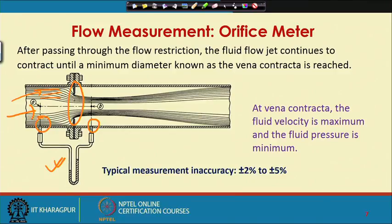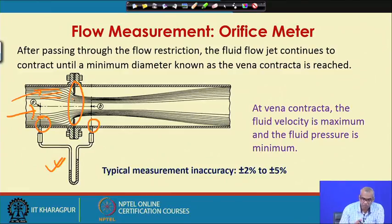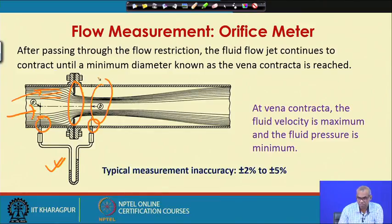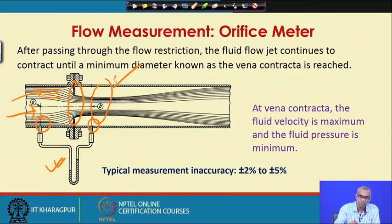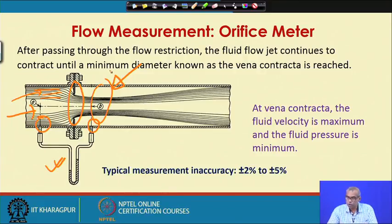As the fluid approaches the flow restriction, the flow jet contracts, but it continues to contract even after leaving the orifice to some extent, and then again it expands. After passing through the flow restriction, the fluid flow jet continues to contract until a minimum diameter known as vena contracta is reached. At vena contracta, the fluid velocity is maximum and the fluid pressure is minimum.